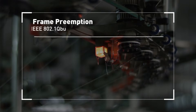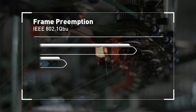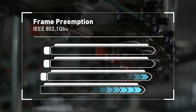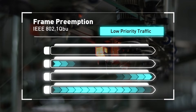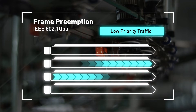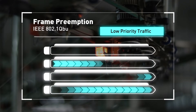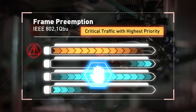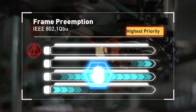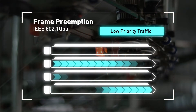Two: frame preemption. In highly converged networks, higher priority traffic can be delayed by low priority frames, leading to a shutdown or greater damage. Frame preemption allows for a reduction of transmission latency for express traffic, which can preempt low priority packets.